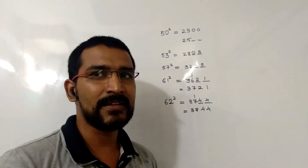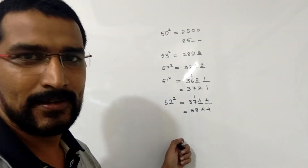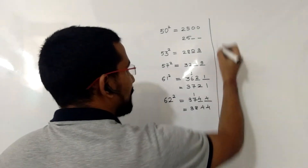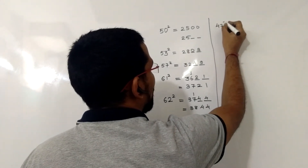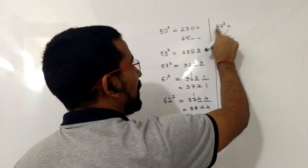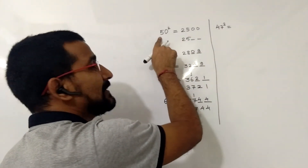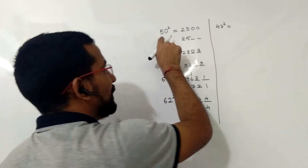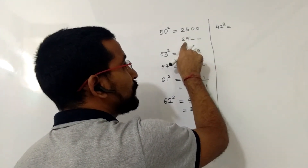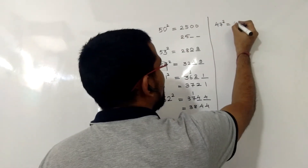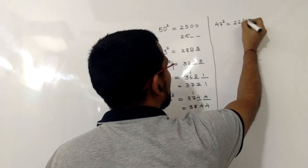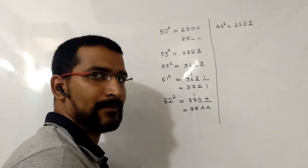Those were examples for numbers greater than 50. Now let's take examples for numbers less than 50. For example, 47 squared: 47 is 3 less than 50, so we subtract 3 from 25, giving 22. The square of 3 is 9, so the answer is 2209.